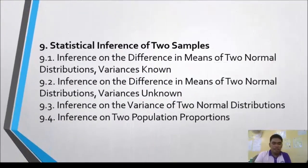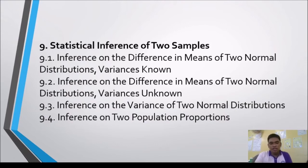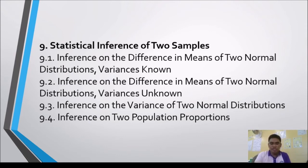The ninth topic is Statistical Inference for Two Samples, with four lessons: inference on the difference in means of two normal distributions with known variance, inference on the difference in means of two normal distributions with unknown variances, inference on the variances of two normal distributions, and inference on two population proportions.